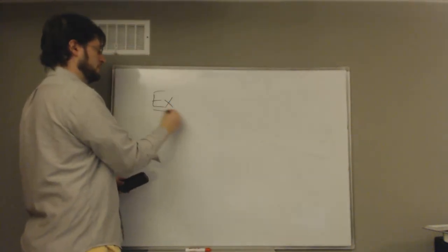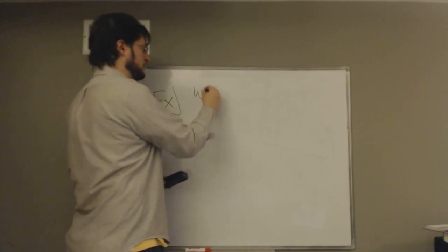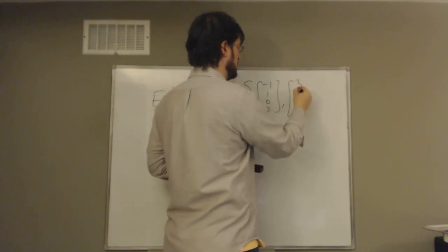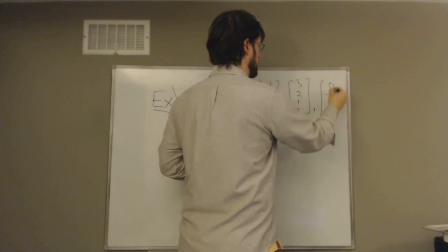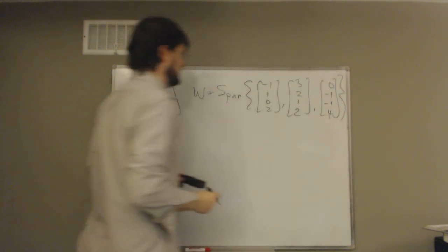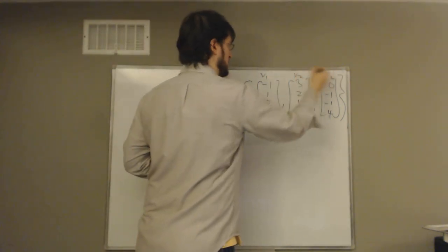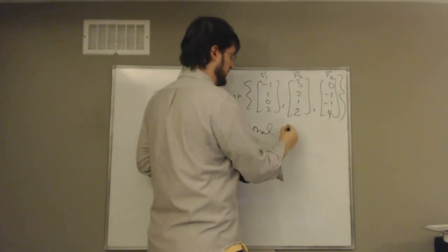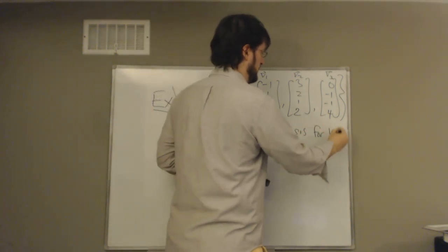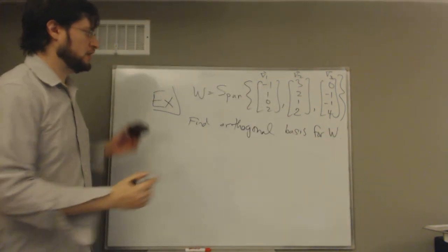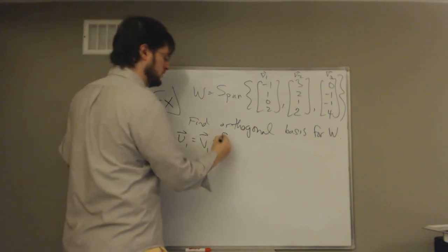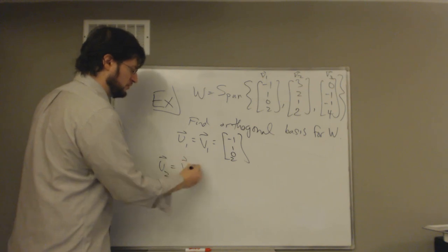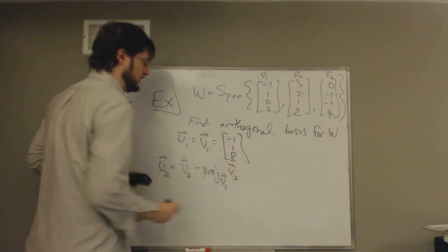Suppose W = span{(−1, 1, 0, 2), (3, 2, 1, 2), (0, −1, −1, 4)}. These are V1, V2, V3. Let's find an orthogonal basis for W. We set U1 = V1 = (−1, 1, 0, 2), and U2 = V2 − proj_{U1}(V2).